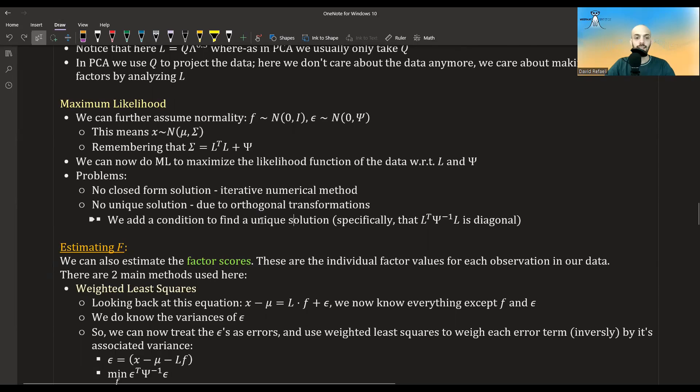So what we do, we have to add another condition to this problem. We maximize the likelihood of our data with regards to L and psi, given some condition. And the condition that is given in the book is that we want this matrix to be diagonal. And so now we will have a unique solution. The iterative numerical method will give us some one unique solution, which we can use.